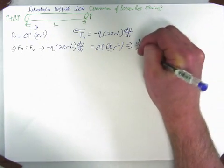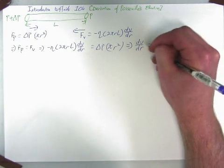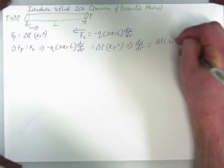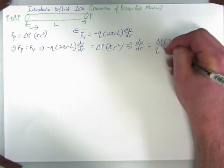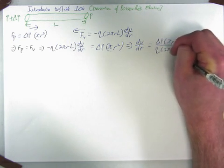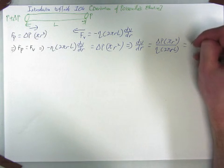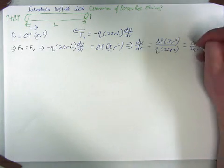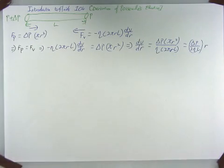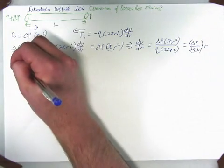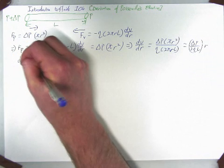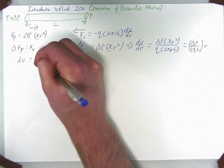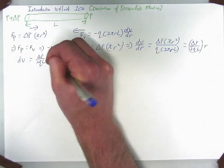Therefore, dv/dr equals delta P times pi r squared divided by minus 2 pi mu r L, which equals delta P over 2 mu L times r. Therefore, change in velocity equals delta P over 2 mu L times r times dr. We are going to integrate this equation.